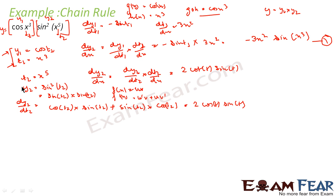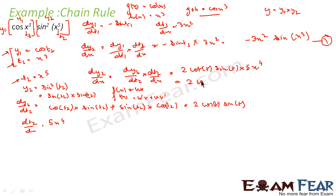The next part I need is dt2/dx. From the equation t2 = x⁵, I get dt2/dx = 5x⁴, since x to the power n becomes nx^(n-1). So this becomes 5x⁴. Since we want everything in terms of x, we replace t2 with x⁵, giving dy2/dx = 2·cos(x⁵)·sin(x⁵) · 5x⁴ = 10x⁴·cos(x⁵)·sin(x⁵).